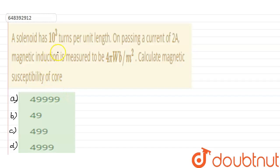A solenoid has 10³ turns per unit length. On passing a current of 2 ampere, the magnetic induction is measured to be 4π Weber per meter square. Calculate the magnetic susceptibility of the core.